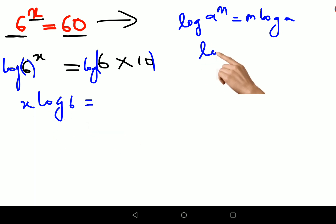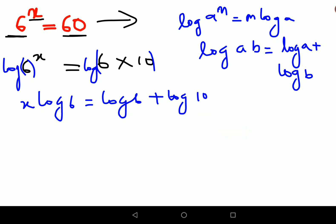And log of a into b can be written as log of a plus log of b. So this would be log of 6 plus log 10. Now in order to find the value of just x, let's divide both sides by log 6.